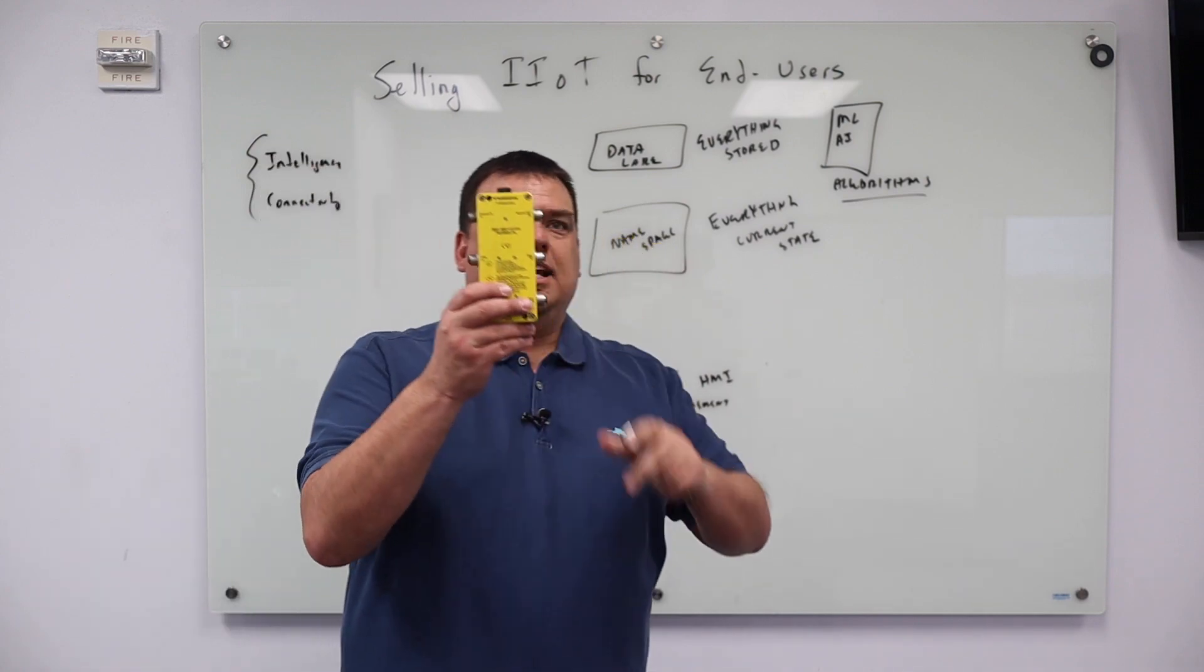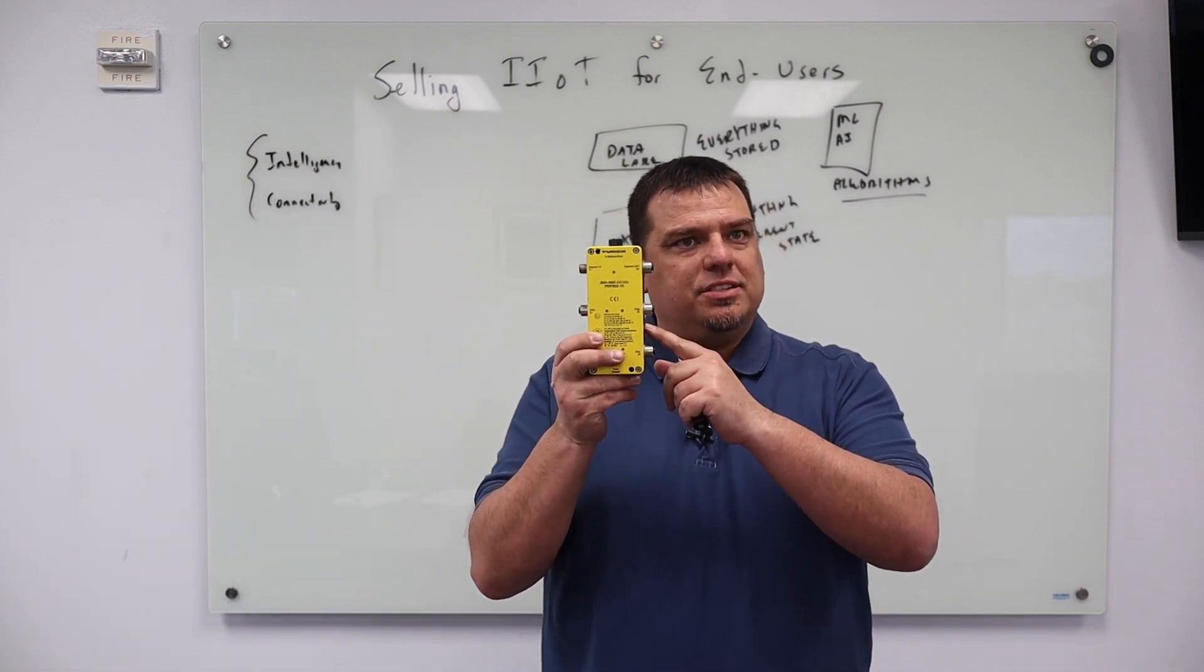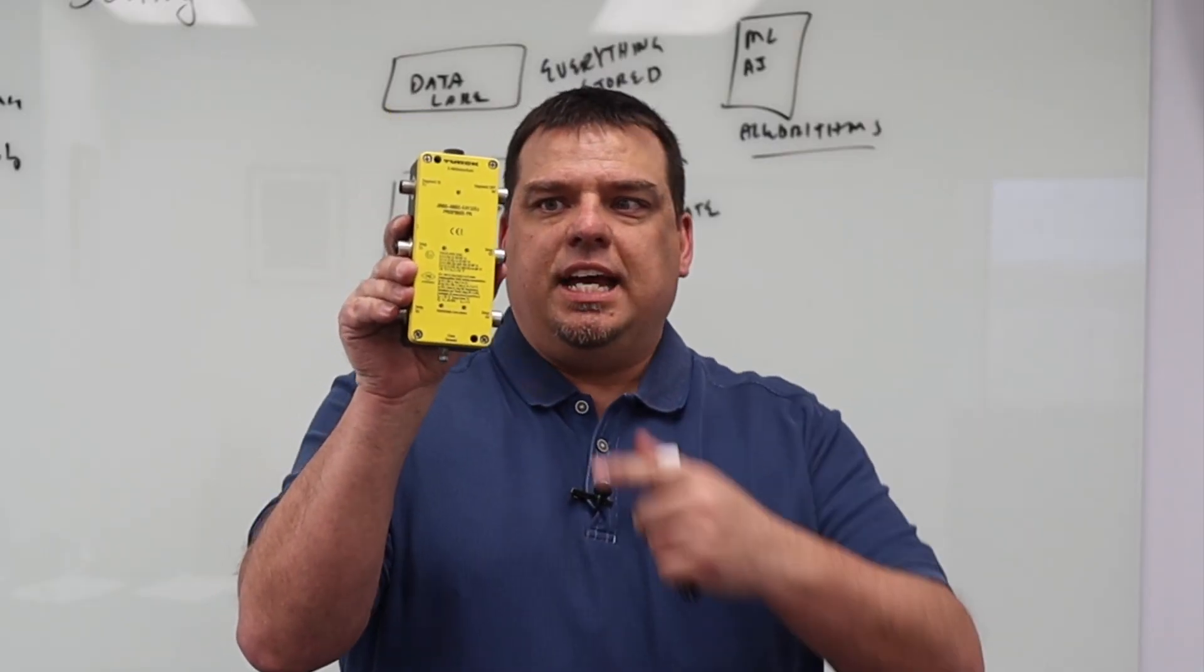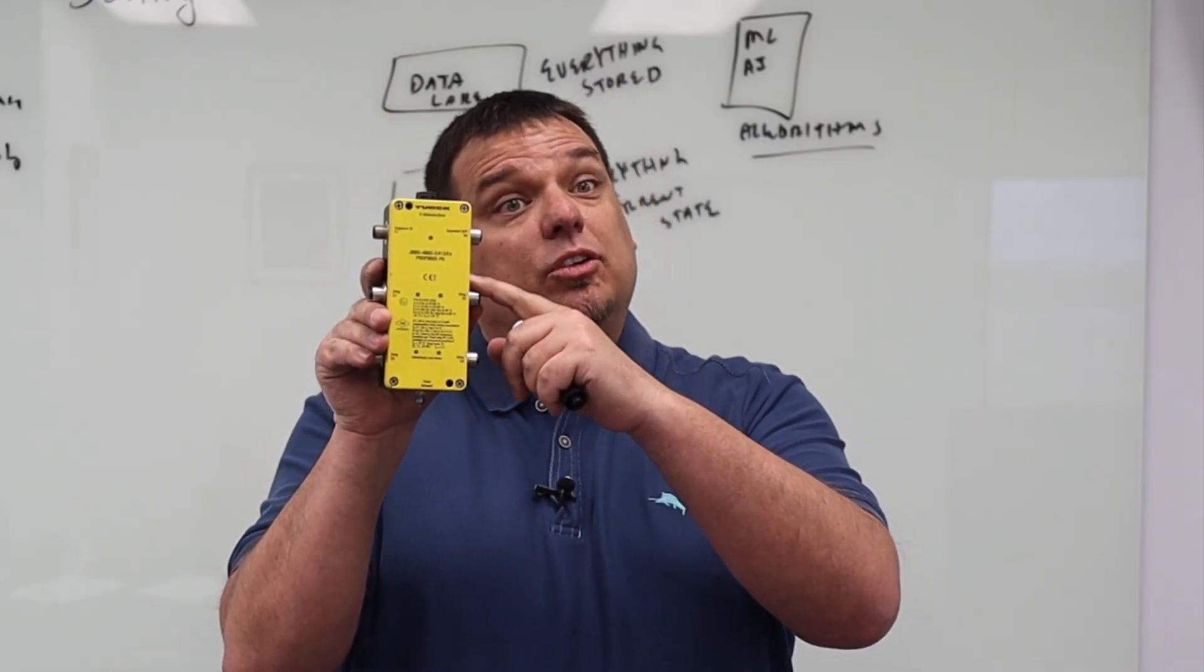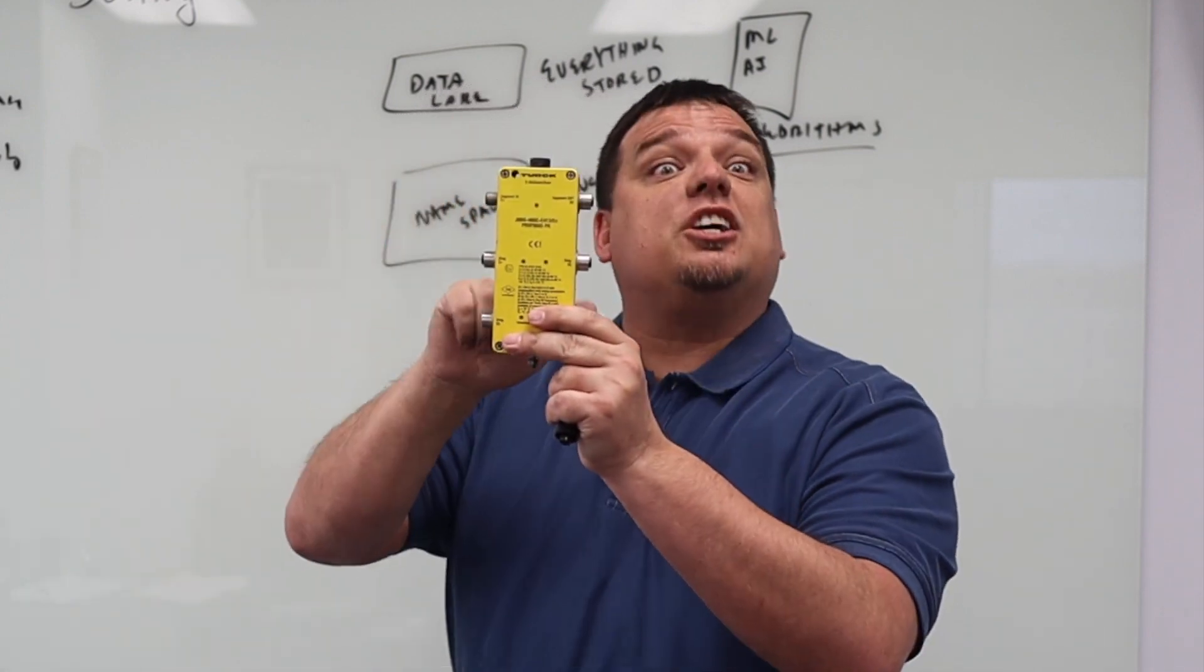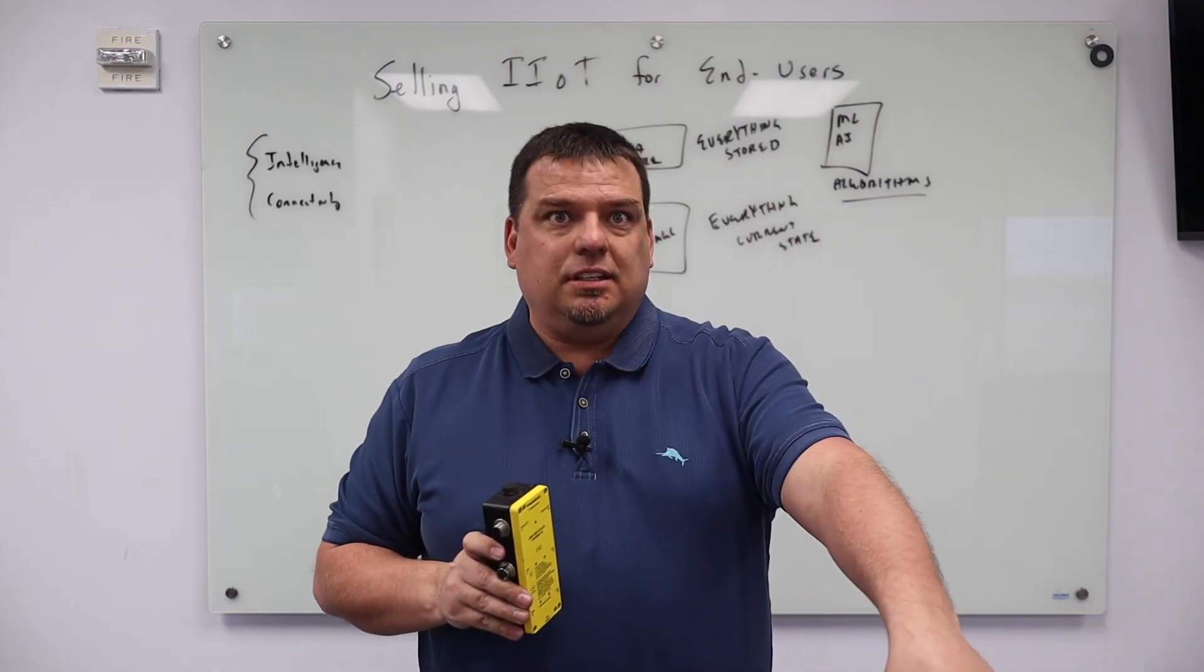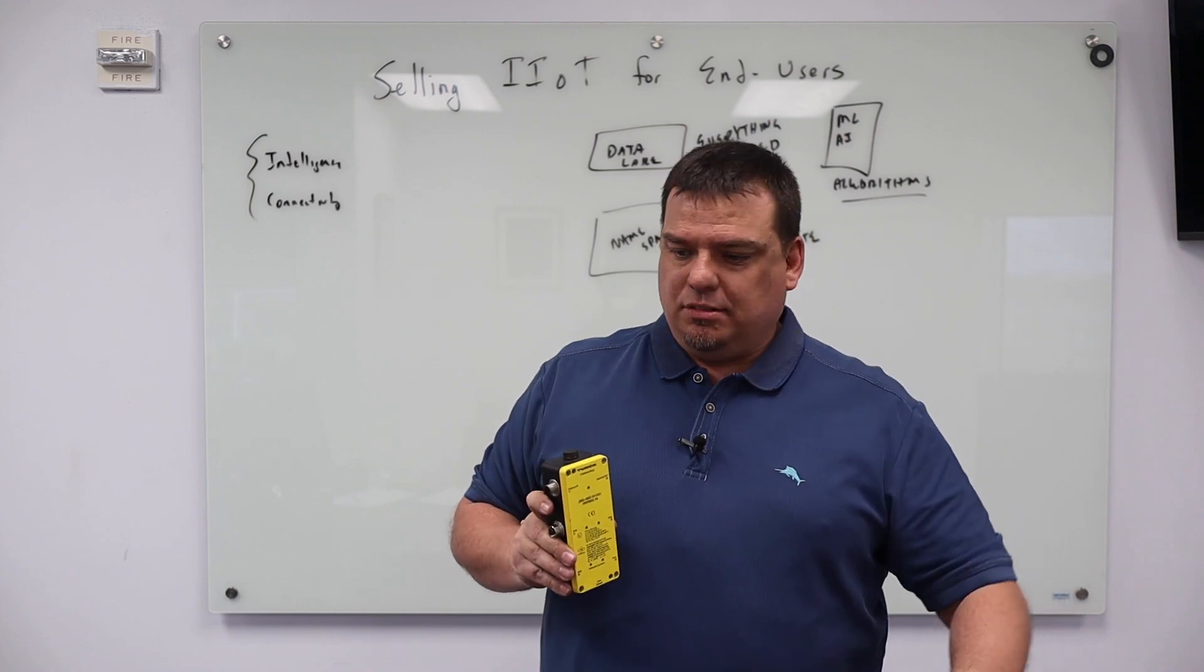This is an Industry 3.0 device. The derivative of this device is going to have intelligence. Not only is it going to publish information into our data lake, it's going to consume information from our data lake. That's IIoT. So you've got updates. You got the Advantech Uno. Can you hear me, that Uno?